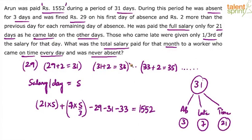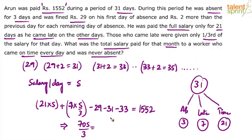Taking 29, 31, and 33 to the other side: 29 + 31 is 60, and 60 + 33 is 93. So 1552 + 93 = 1645. On the left side, we have 21S + 7S/3. Taking the common denominator: 3 × 21 = 63S, plus 7S gives 70S. So we have 70S by 3 equals 1645.